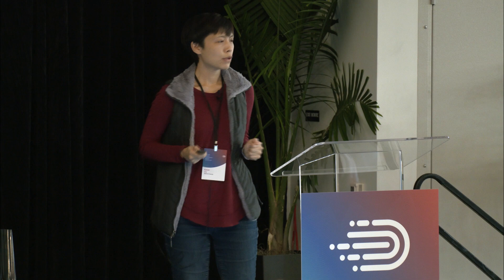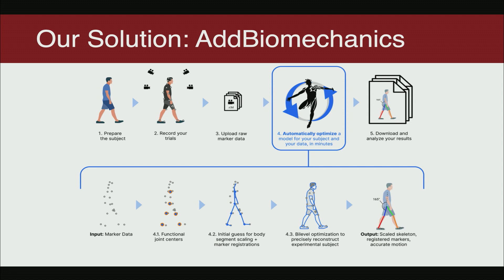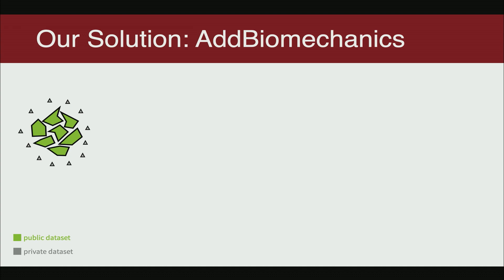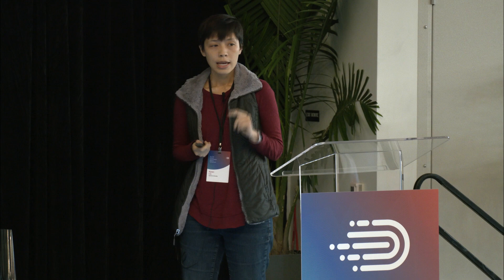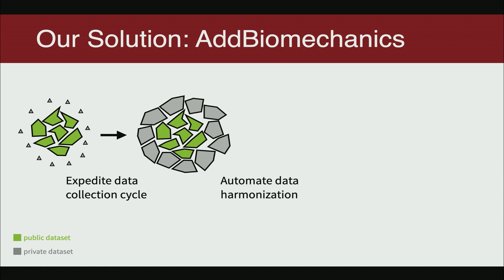We propose a solution called AddBiomechanics, which can solve both of those problems. AddBiomechanics is a web-based tool that automatically processes raw motion capture data to generate accurate digital twin models along with their kinematic and dynamic motion. AddBiomechanics can expedite the data collection cycle from days to minutes, allowing researchers to capture more data faster and more easily. Because AddBiomechanics handles the entire data processing pipeline, the output data are harmonized and consistent with machine learning toolchains.